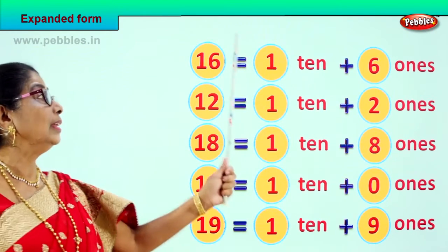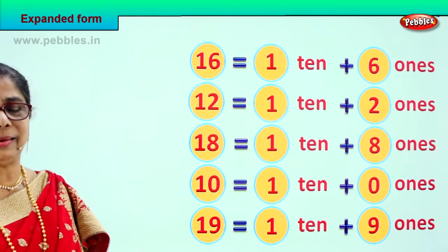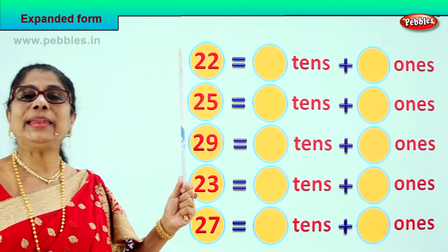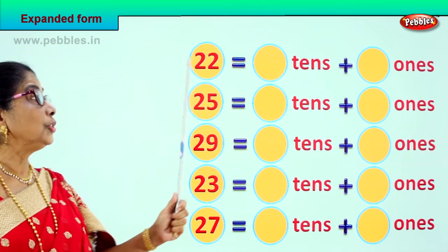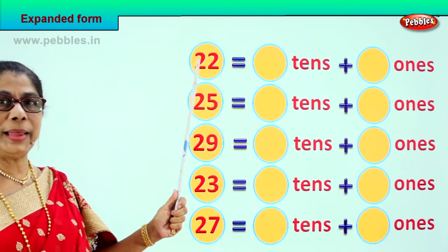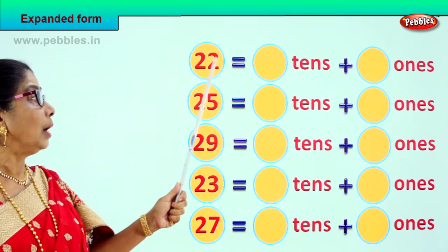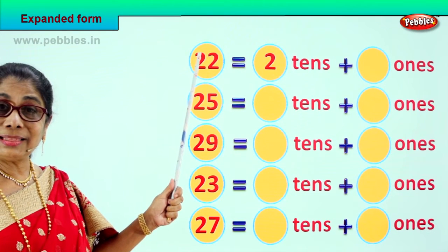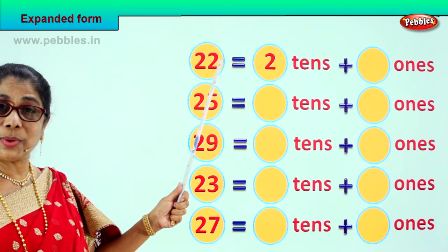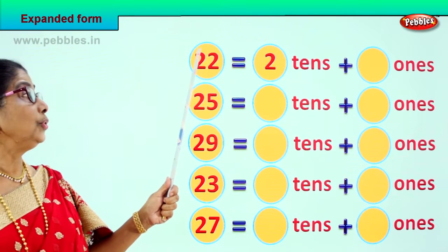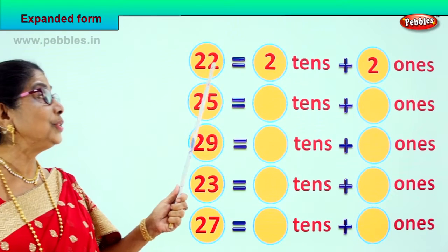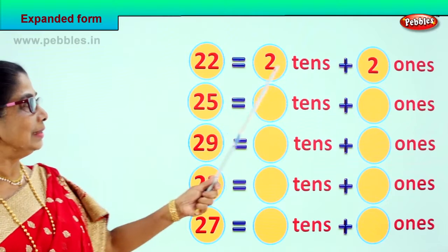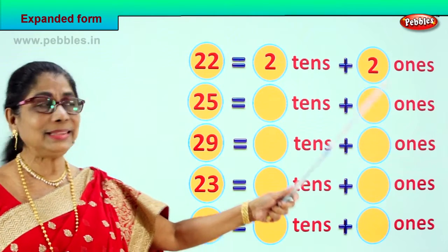This is called expanded form — the number given, you expand. What number is this? 22. 2 and 2. How many ones? How many tens? The first place is tens, the second is ones. So you say: 2 tens, 2 ones. Very good. 2 tens, 2 ones.